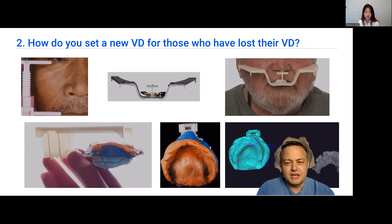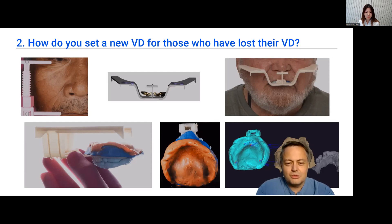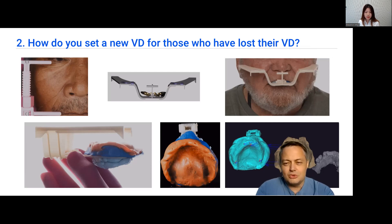This also allows us to get the inter-jaw relationship. It works for dentate cases, where one arch is a denture, and also works for both arches when teeth are missing. With these impressions taken, we can match the intraoral scans to this interrelationship, which we also scan. We have the ability to do smile design with these techniques as well, so I encourage you to look it up - it's a very nice and predictable technique.